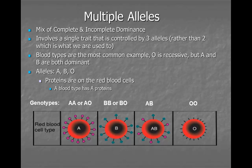Multiple alleles involve a single trait that is controlled by three alleles. For our purposes, we will be using blood typing, which is the most common example. In blood typing, there is a mix of complete and incomplete dominance. With the blood types, we will be looking at blood types A, B, AB, and O.